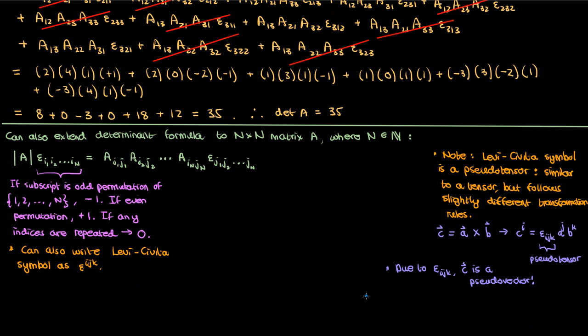Similarly, the curl of a vector field is not a vector, it's a pseudovector. Why is that? Because recall from vector calculus that the curl of a vector field v is defined as the cross product of the gradient operator del over here with the vector v. So because it's a cross product we can then conclude that it must also be a pseudovector, and this is why the curl is a pseudovector.